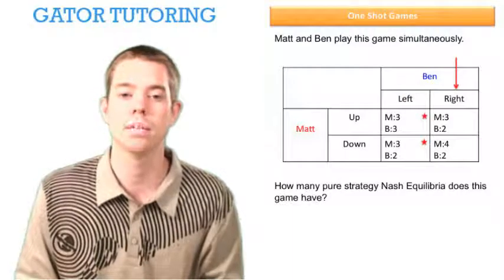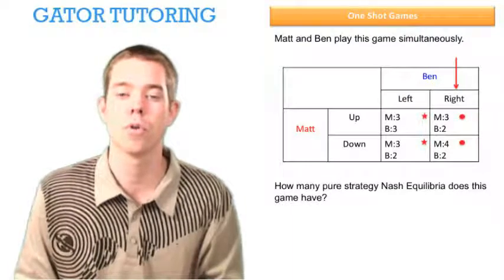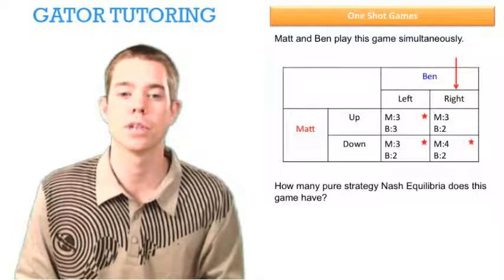When Ben chooses right, Matt's choosing between three or four. Well he likes four better, so we star four.